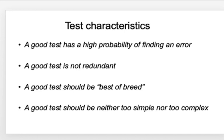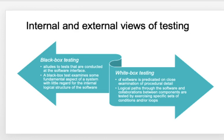A good test has a high probability of finding an error. It is not redundant, it should be the best of the breed, and it is neither too simple nor too complex. Considering these four key test characteristics, testing is divided into two broad categories: black box testing and white box testing.